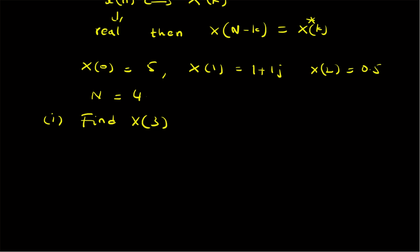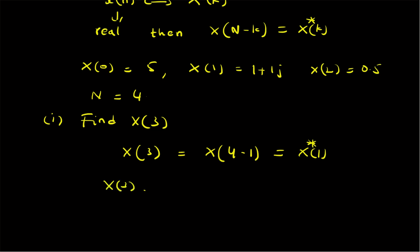X of 3 can be determined by using the symmetry property. X of 3 can be written as X of N minus k where N is 4, so 4 minus 1, meaning k is equal to 1. Therefore, X of 3 must be X of 1 conjugate. Since X of 1 is given to be 1 plus j, X of 3 must be equal to 1 minus j.